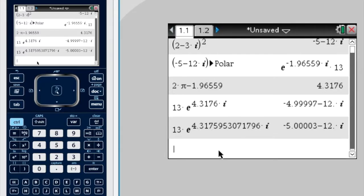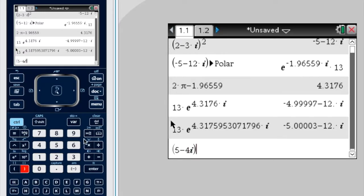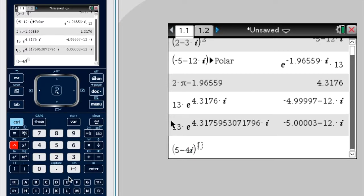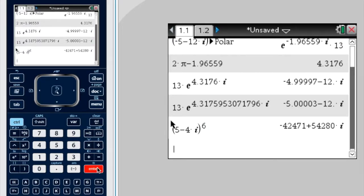Okay, so more powers can be done. For instance, 5 minus 4i, to the power of 6. So let's put brackets around that. To the power of 6. Enter. Okay, we can also put it in mod arg form.